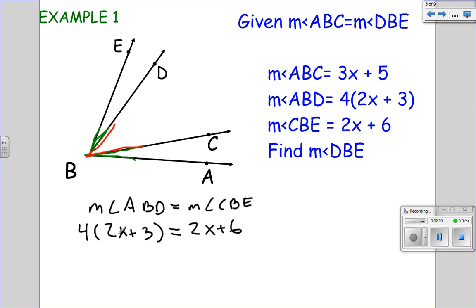Okay, let's go back to the algebra. So 8x plus 12 equals 2x plus 6. Now we subtract 2x from both sides and subtract 12 from both sides, which gives you 6x equals negative 6. Divide by 6, so x equals negative 1.